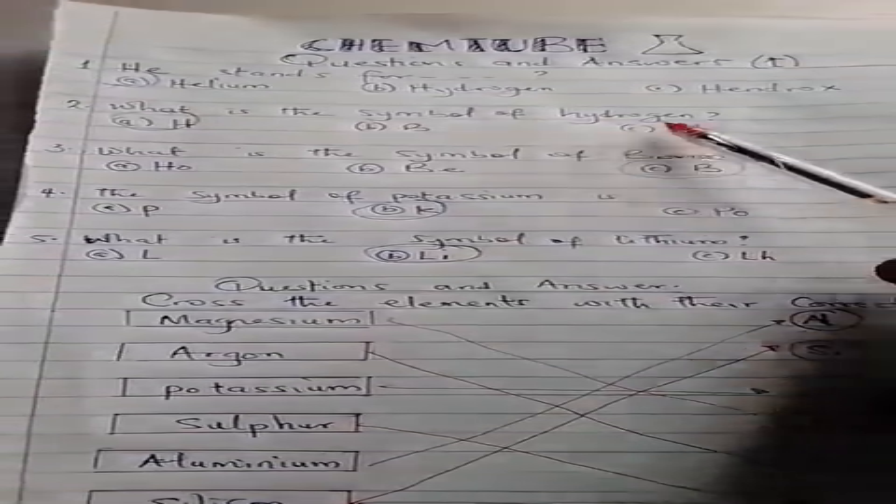These are the questions. He stands for helium. What is the symbol of hydrogen? It is H. What is the symbol of boron? It is B. What is the symbol of potassium? What is the symbol of lithium? It is Li.